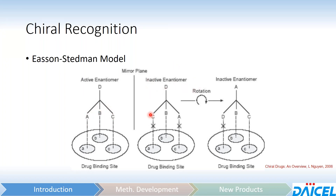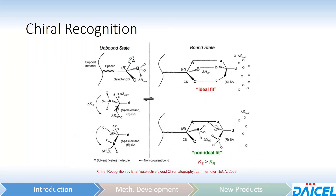The inactive enantiomer has the same functional groups, but they are in a different orientation and therefore do not line up as well with the chiral selector. Therefore, the inactive enantiomer would be the one eluting the quickest. Even if you were to rotate it, you do not get the same kind of match as you do with the active enantiomer, and the energy difference should hopefully be enough to separate the two enantiomers on the column.